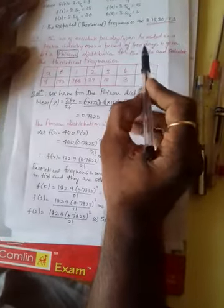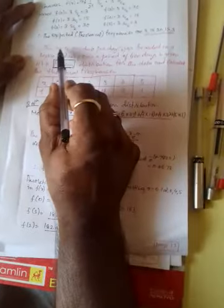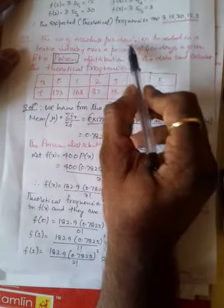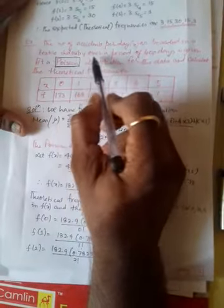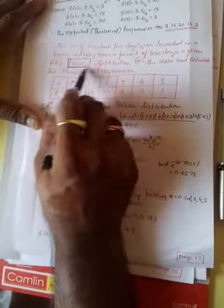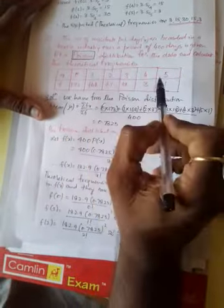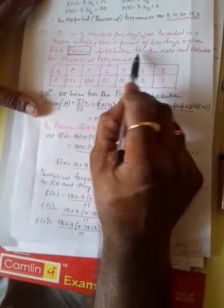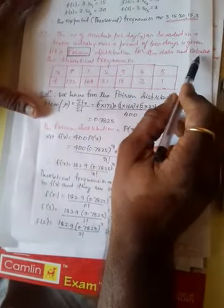Let me continue with the first example. The number of accidents per day, that is x, as recorded in a textile industry over a period of 400 days is given. Fit a Poisson distribution — note that here the word Poisson is given, so it is a simple example. Fit a Poisson distribution for the data and calculate the theoretical frequencies. The table is shown here.